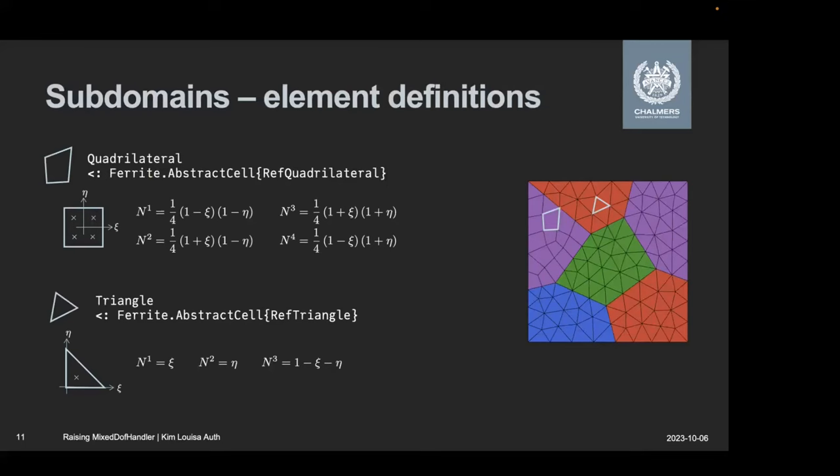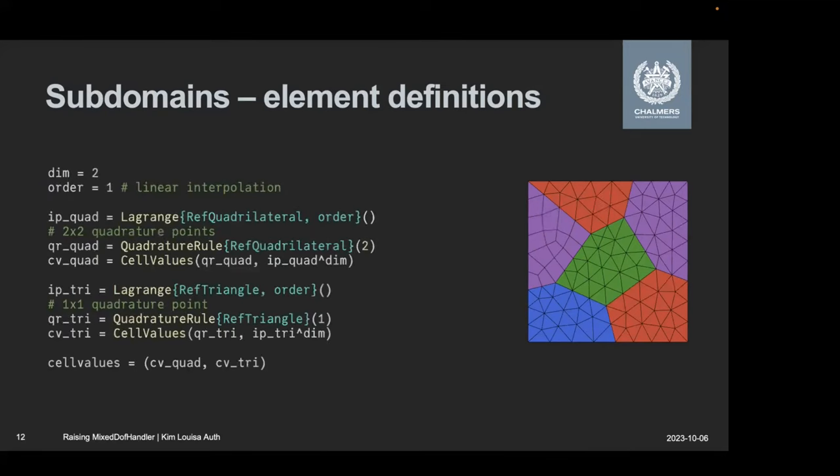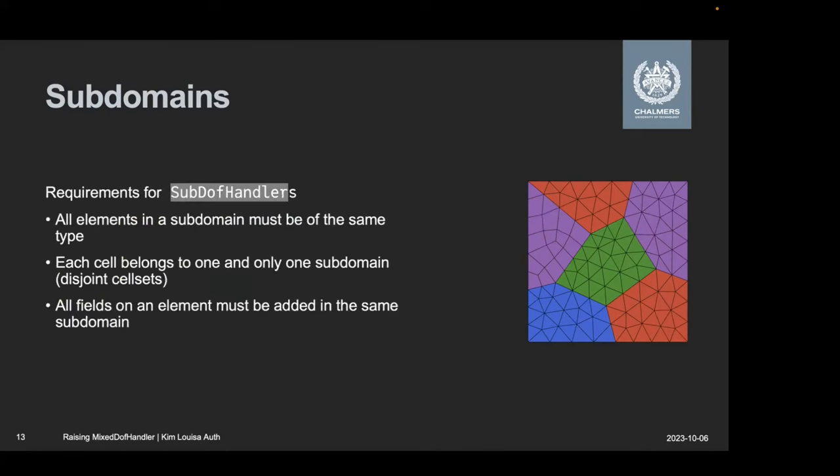So if I have a mixed grid, then I do want different Lagrange polynomials. Maybe I want different integration points as well. So I need to set up two different ones of these. So here I have one for the quadrilaterals that gets full integration with two times two quadrature points. And then I have CST triangles with one integration point. And in the end here, I gather both of them in a tuple. So that's the element definitions.